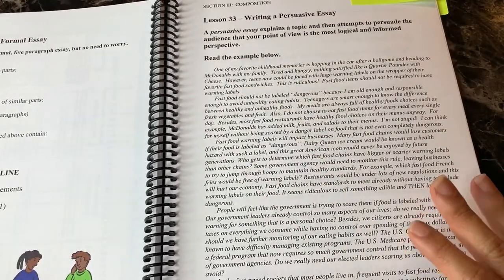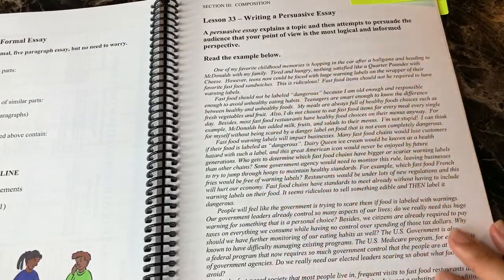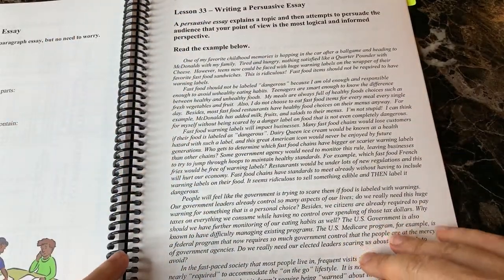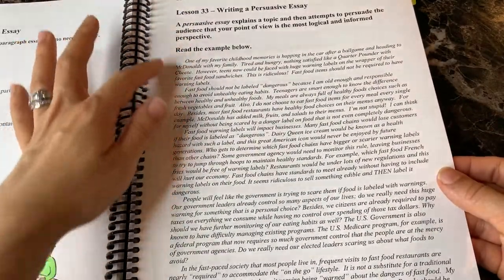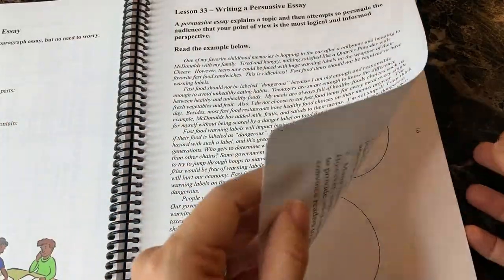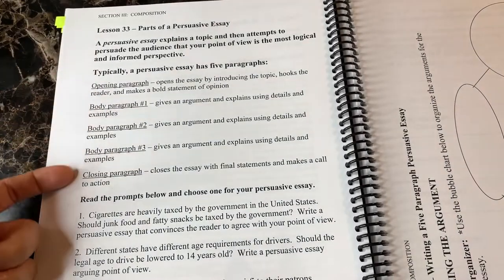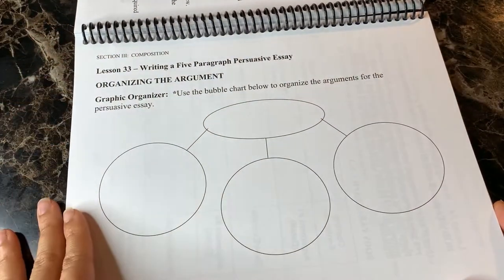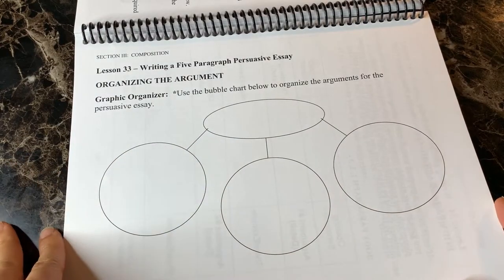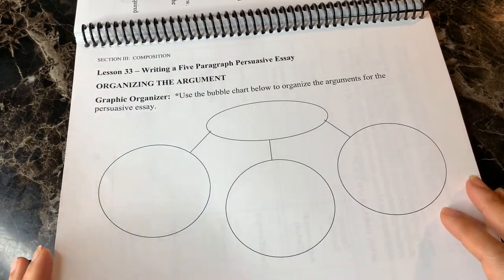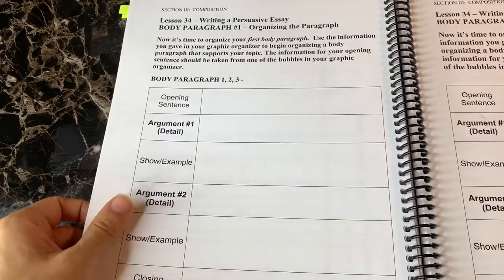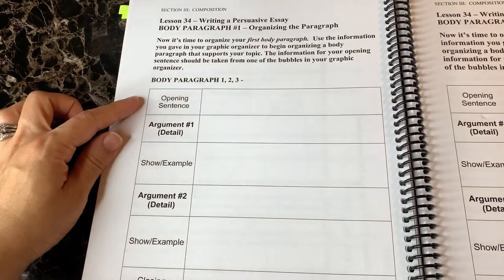Looking at a persuasive essay, I wanted to walk you through one example from each level. This is lesson 33. The first thing it has is an example so the student can read through — there is also the video lesson that goes with it. Then it talks about the parts of a persuasive essay. Then you move on to the organizer. There are a lot of different graphic organizers used to help your student organize their thoughts before completing their composition.